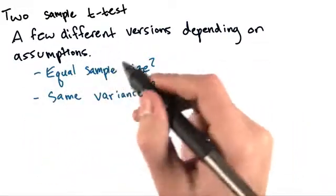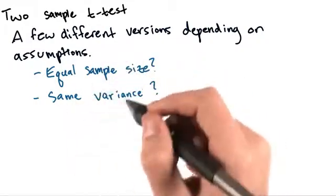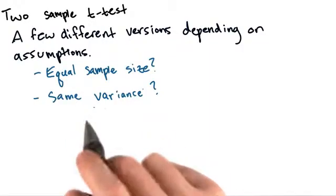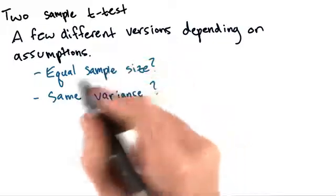So we might want to ask questions such as, do our samples have the same size, and do they have the same variance? Let's discuss a variant of the t-test called Welch's t-test in more depth, since it's the most general. It doesn't assume equal sample size or equal variance.